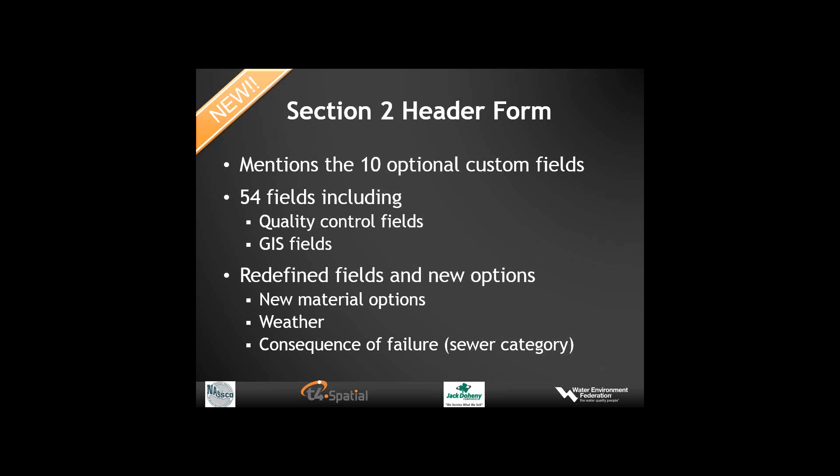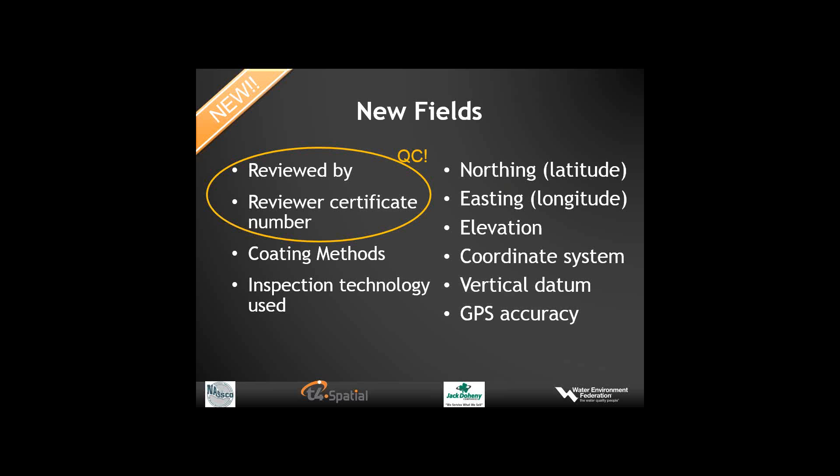There are redefined fields and new options with regards to new materials, weather conditions, and consequence of failure. The consequence of failure would be used by, for example, someone in the engineering department. In the new fields, the important ones are reviewed by and review certificate number, referring to quality control—someone executing quality control of videos and the data coding inputted by operators. There are also different coding methods, inspection technology used, northing and easting or lat/long coordinates, actual elevation of the manhole or ground, coordinate system, vertical datum, and GPS accuracy—whether a handheld unit giving plus or minus 3 to 10 meters or something providing much better accuracy.